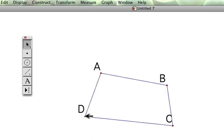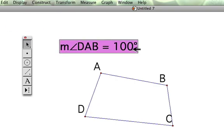And we're now going to measure angle A, so we're going to call this angle DAB, and so that's 100 degrees.